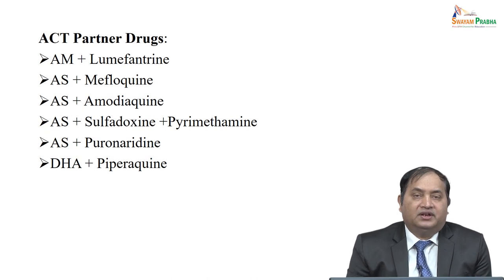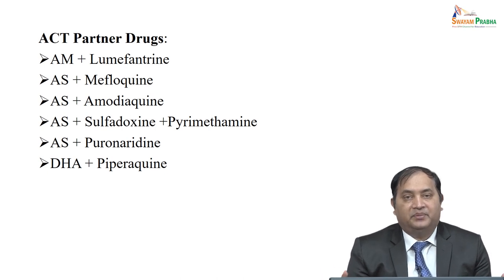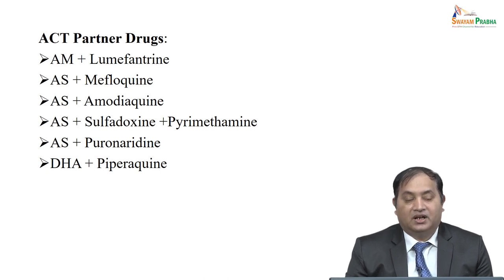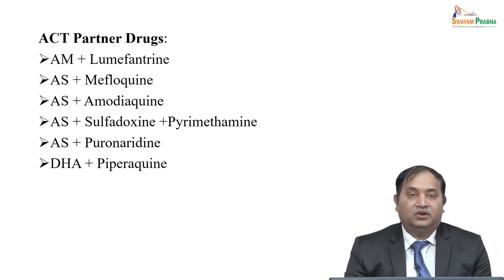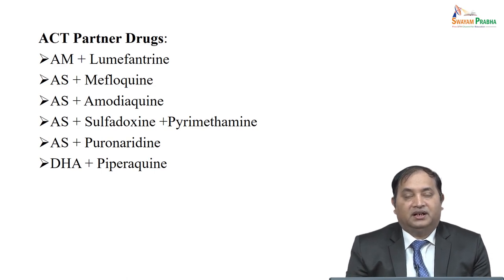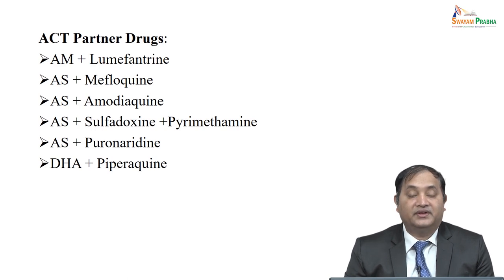Artemisinin-based combination therapy has better efficacy and safety. Options include artemisinin with lumefantrine, artesunate with mefloquine, artesunate with sulfamethoxine plus pyrimethamine, artesunate with pyronaridine, or dihydroartemisinin plus piperaquine. These combinations — artemisinin with lumefantrine, mefloquine, or amodiaquine — have been shown in multicentric clinical trials to have better efficacy in combating malarial resistance.